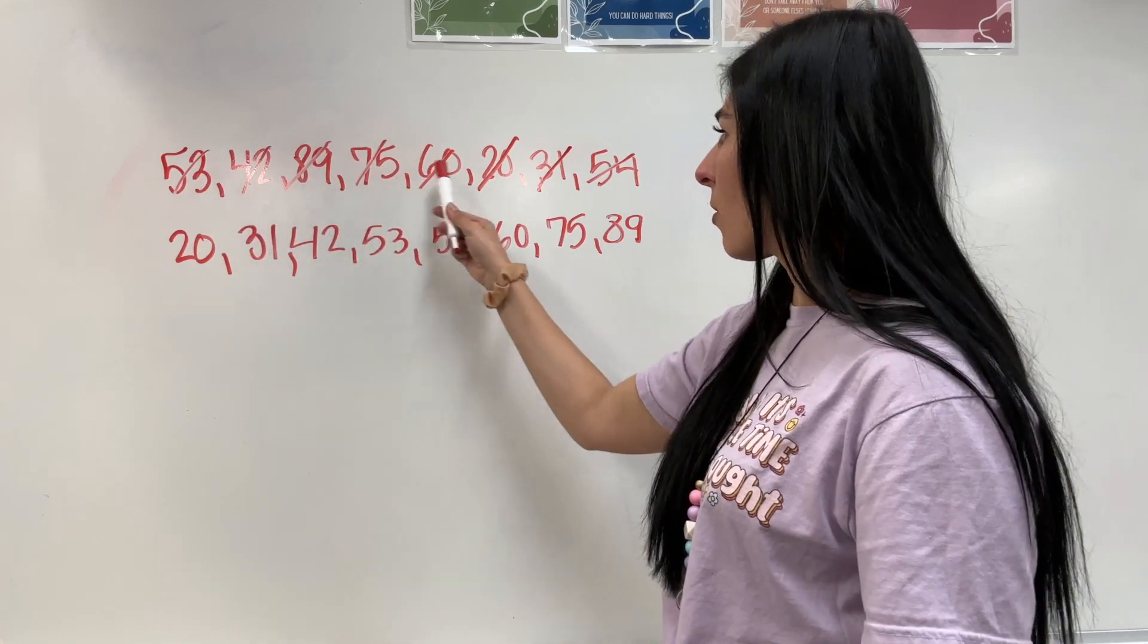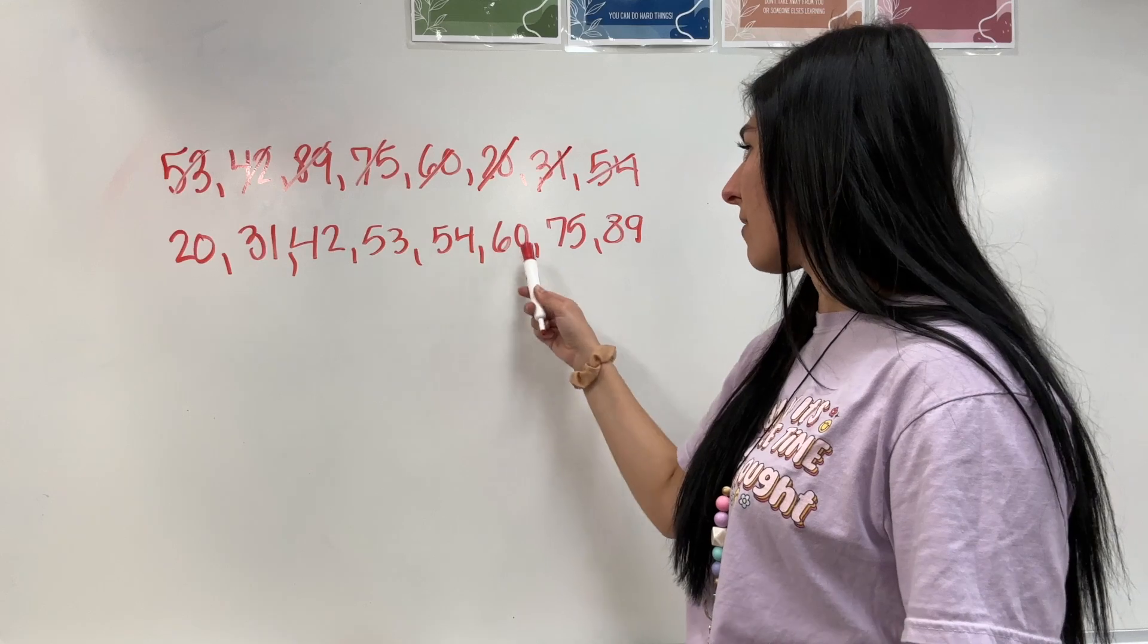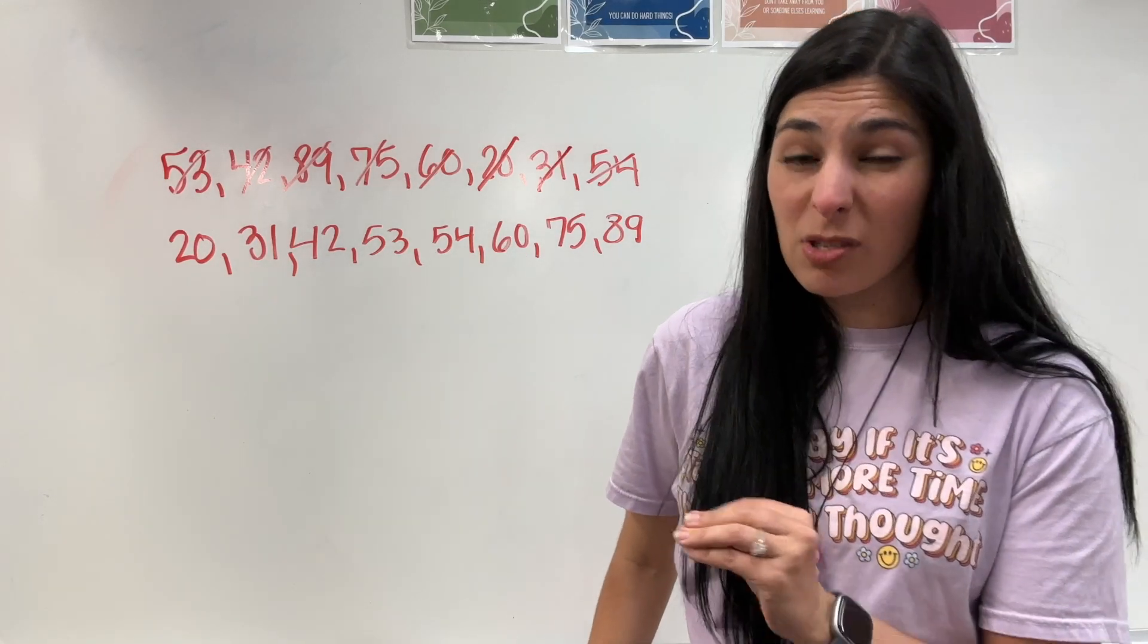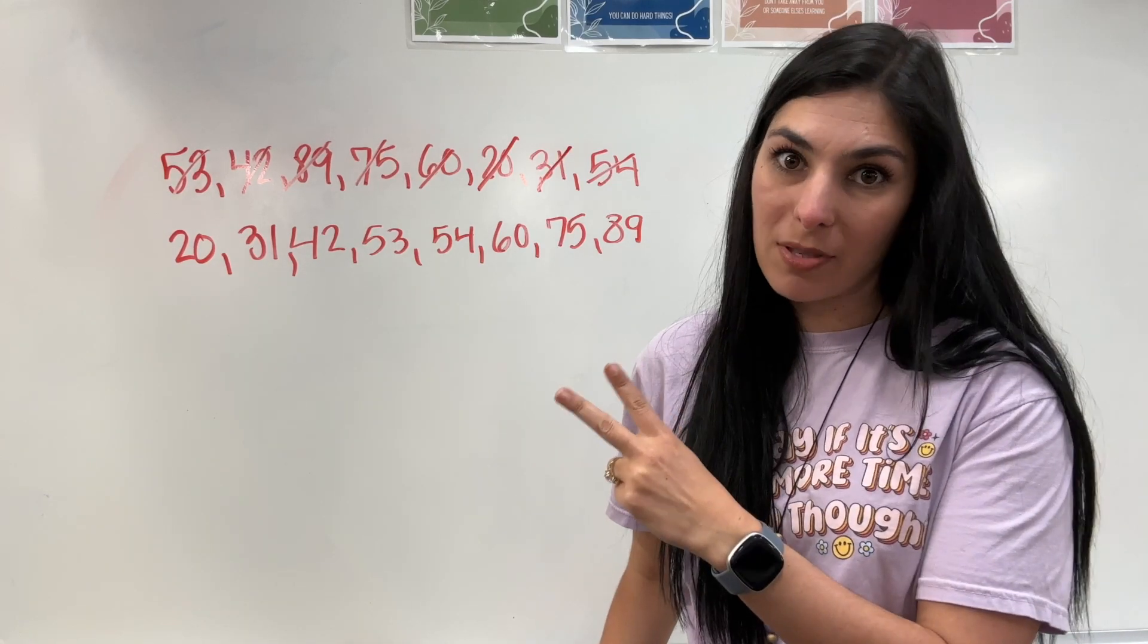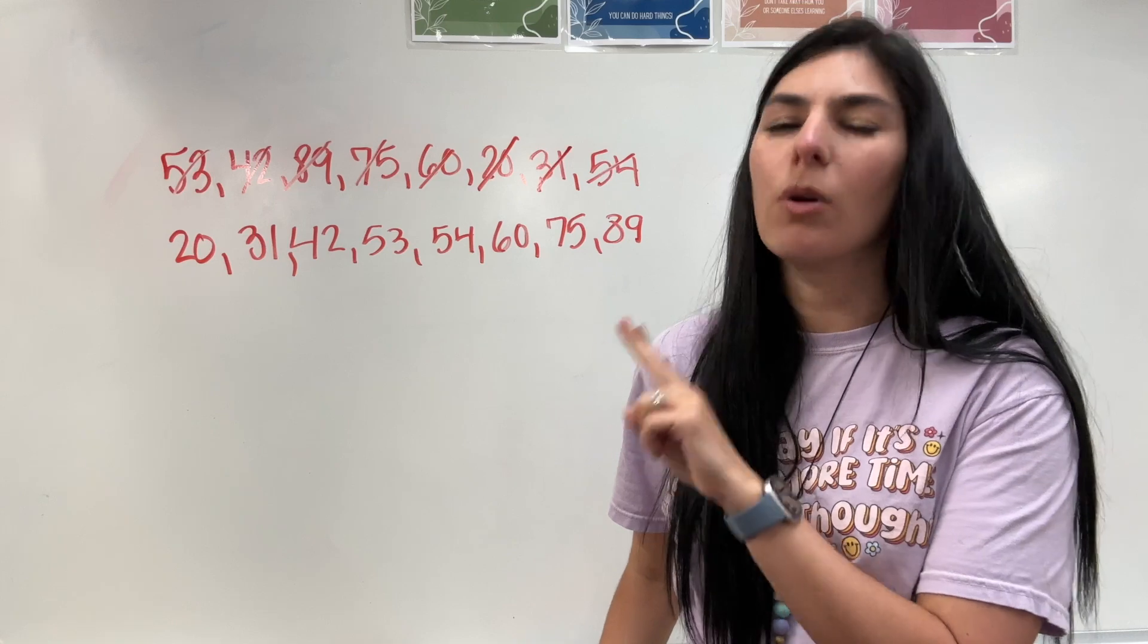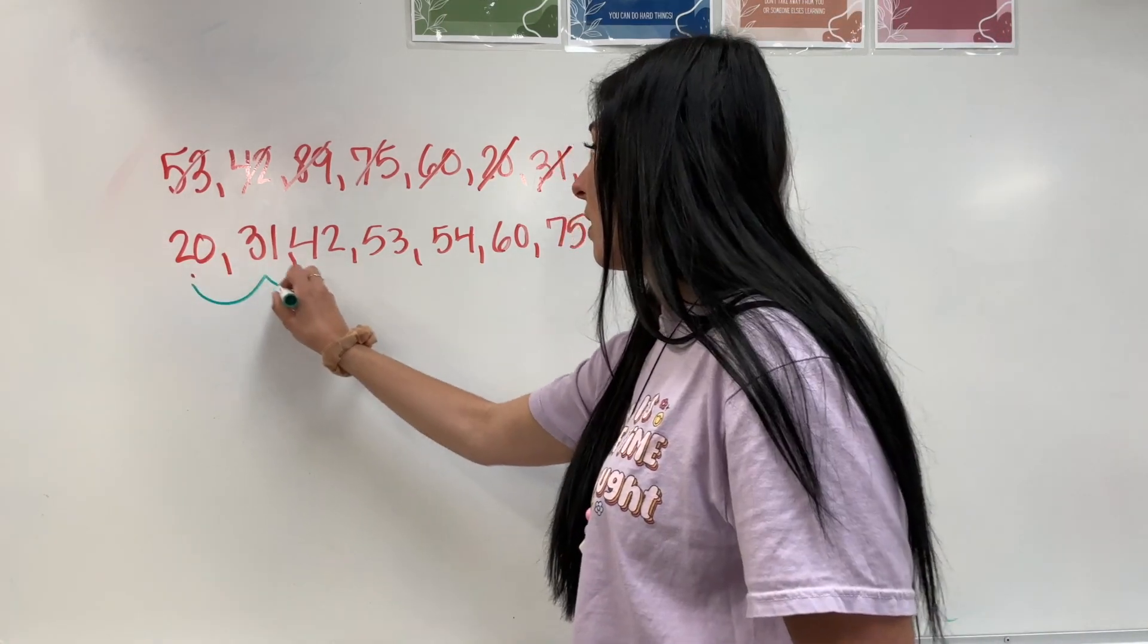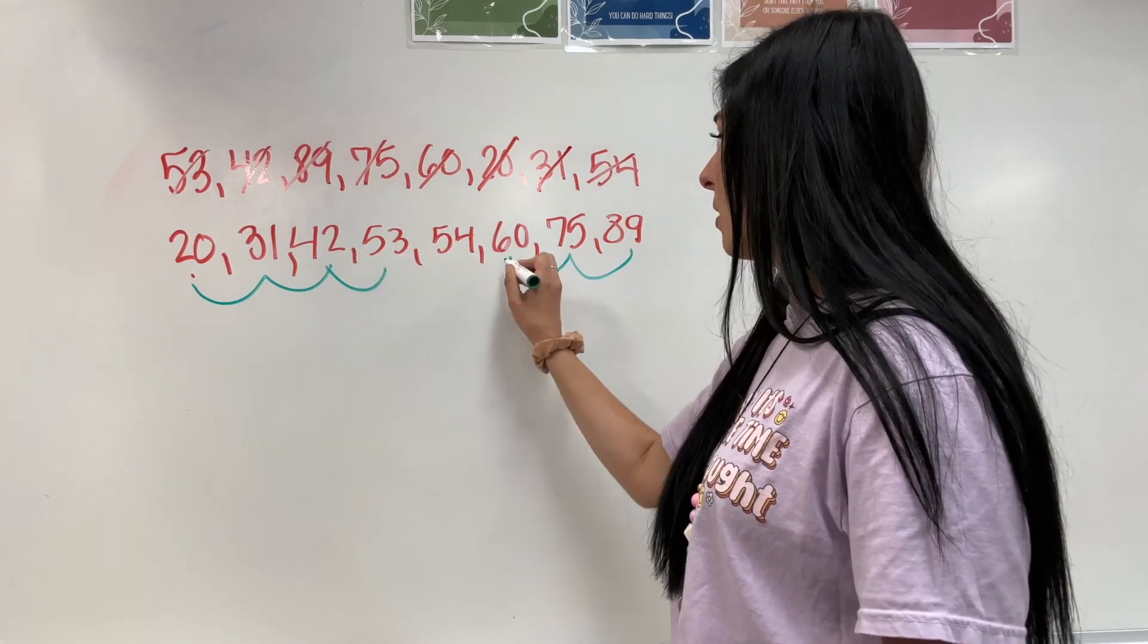Double check, make sure all the numbers are crossed off down below. And I have 1, 2, 3, 4, 5, 6, 7, 8. Recount - 1, 2, 3, 4, 5, 6, 7, 8. Also, the fact that I know that I have 8 numbers, which is an even number, means that my median is going to be 2 numbers that I have to find the mean of to find the true center. So let's go ahead. I'm going to jump: 1, 2, 1, 2, 1, 1.